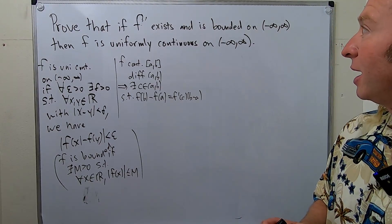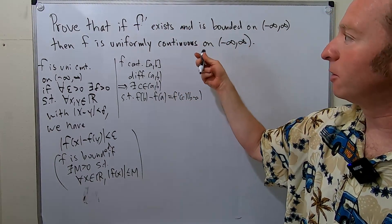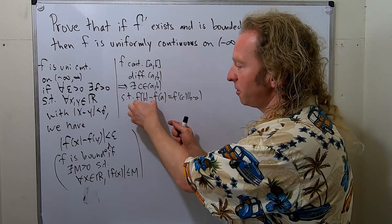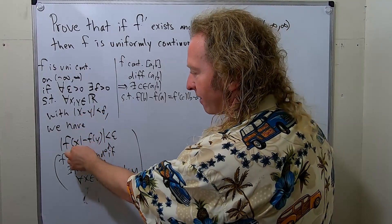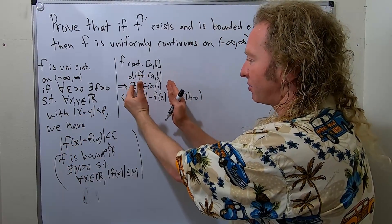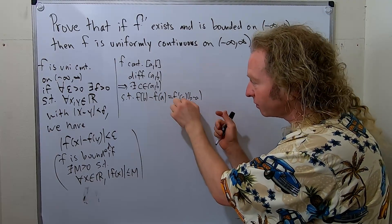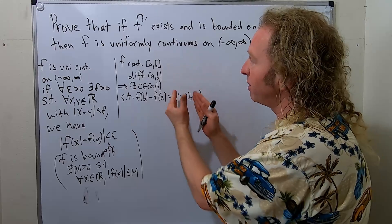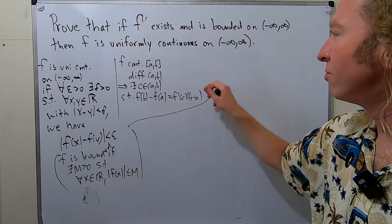So let's go ahead and prove this. What we're going to do is apply the mean value theorem and use the fact that the derivative is bounded. You see here you have f(b) minus f(a), and in the definition you have f(x) minus f(y) — that's the idea. When we take the absolute value, we know f′ is bounded, so the absolute value will be less than some number. Let's work through the proof carefully.